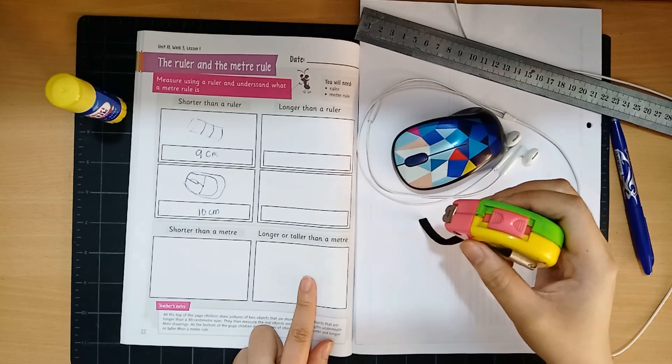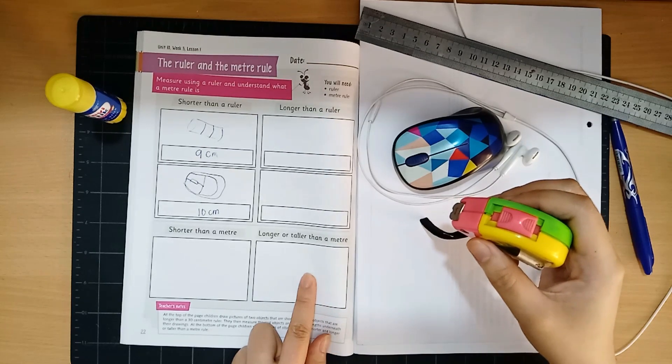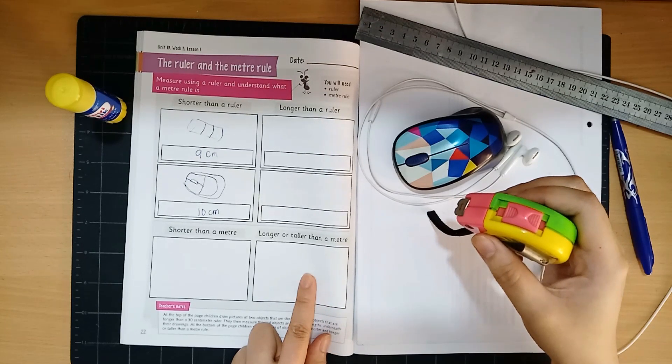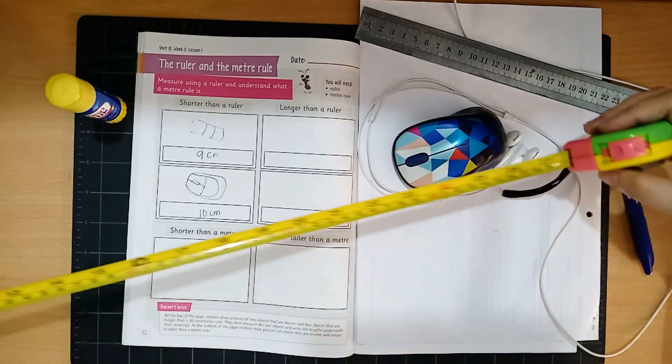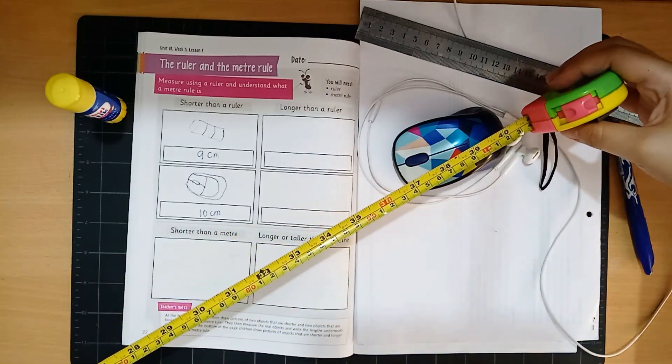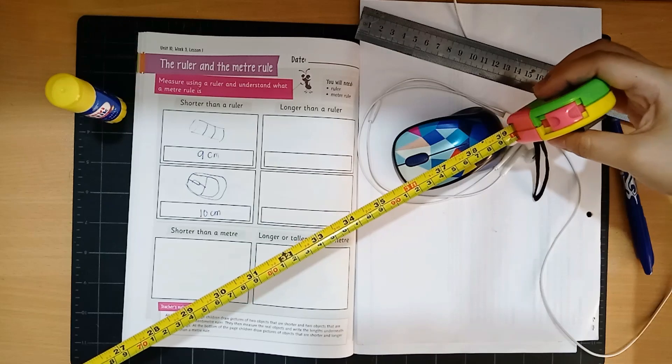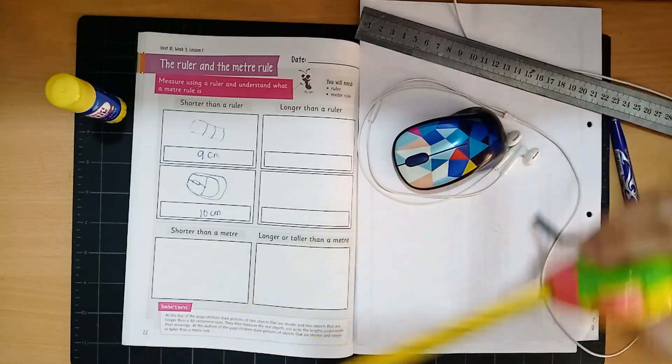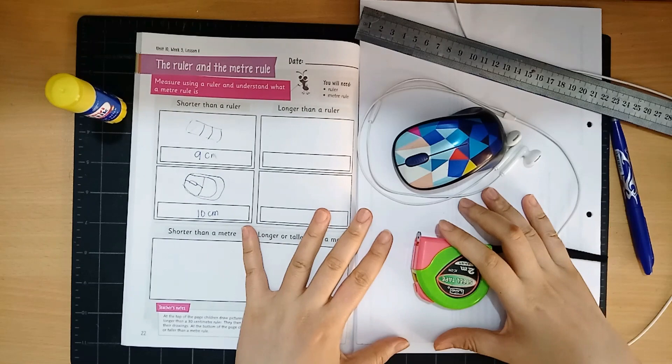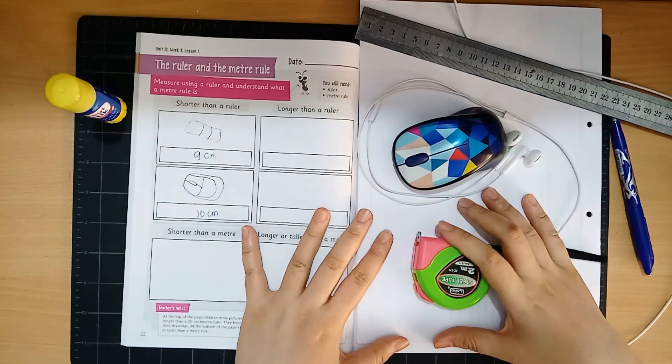I think I'm going to look around my house and measure the door. Probably the door is going to be longer than or taller than one meter. Yes. So are you ready to answer this activity on your own? Have fun!